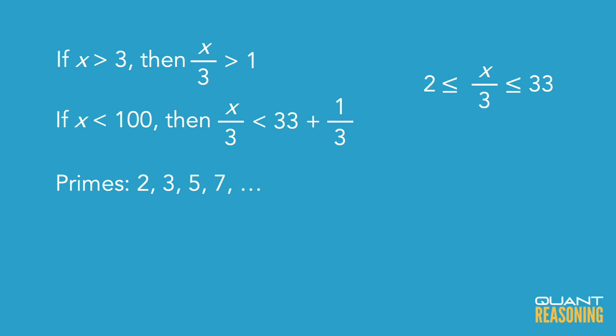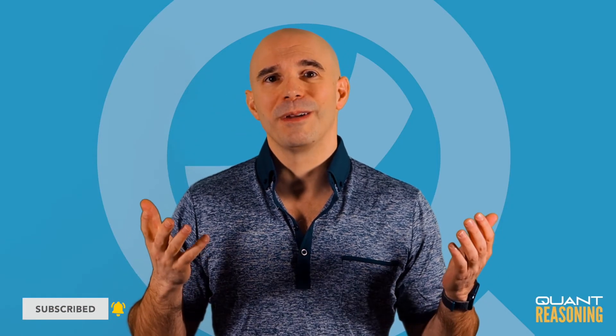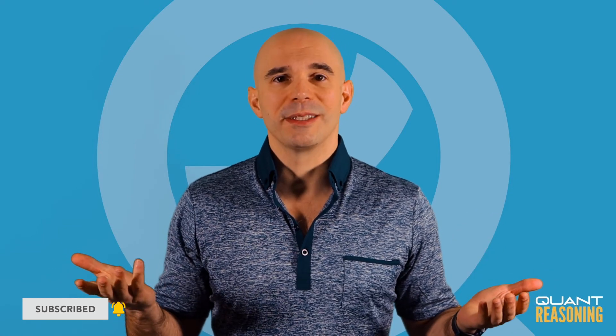Squares of primes. The first few primes are 2, 3, 5, 7, etc. The squares of those would be 4, 9, 25, and 49 — which is already outside of our range. So x over 3 could only be one of 3 squares of primes: 4, 9, and 25. The answer is 3.